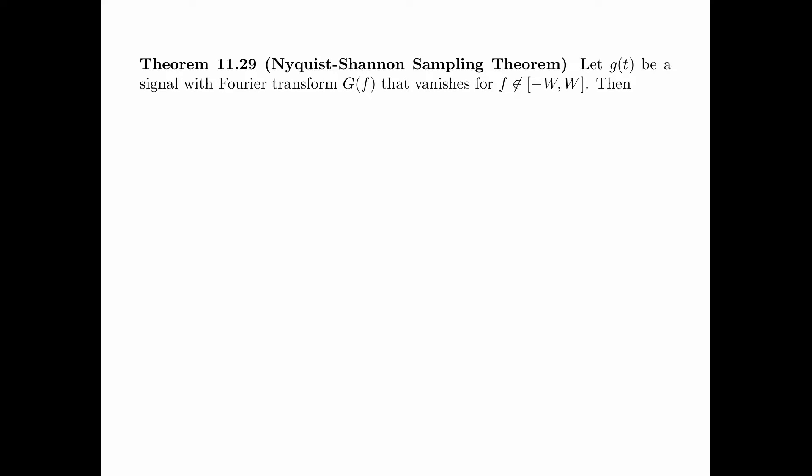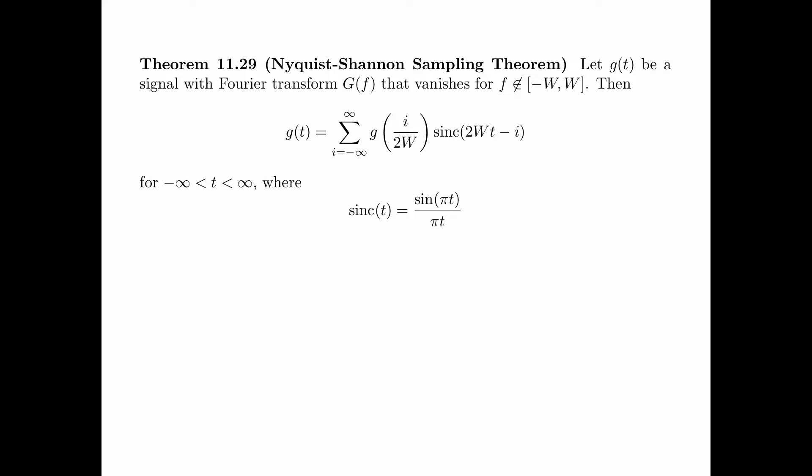Theorem 11.29 is the celebrated sampling theorem, often known as the Nyquist-Shannon Sampling Theorem. Let g of t be a signal with Fourier transform g of f that vanishes for f not in the interval from minus w to w — that is, the highest frequency that g of t can have is w. Then g of t can be reconstructed from the samples as the summation over i from minus infinity to infinity of g of i over 2w times sinc of 2wt minus i, for all t. The sinc function sinc of t is equal to sin of pi t divided by pi t, and is defined to be 1 at t equals 0 by continuity.